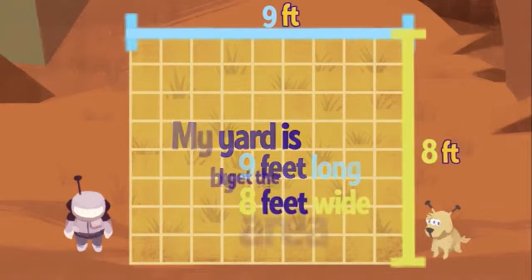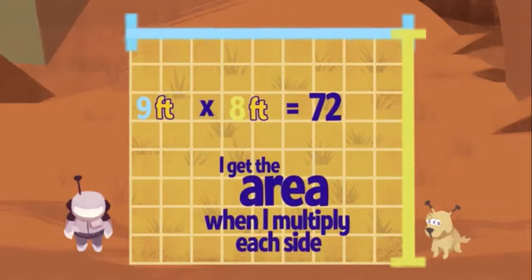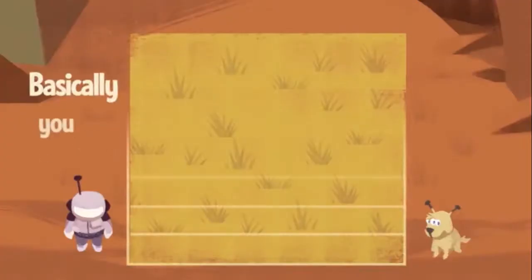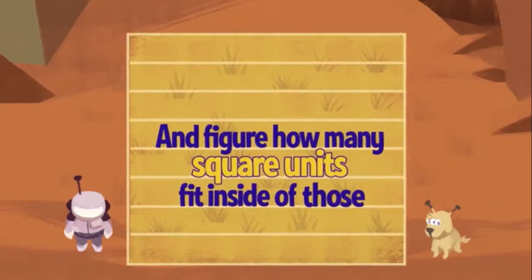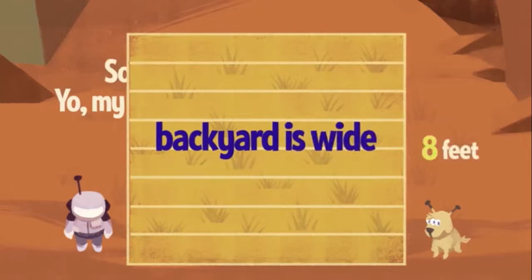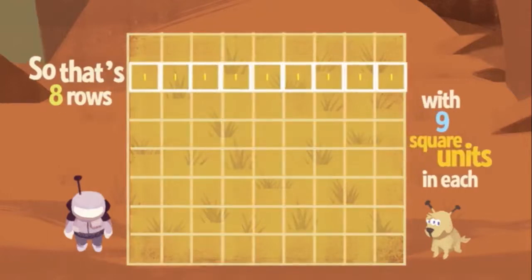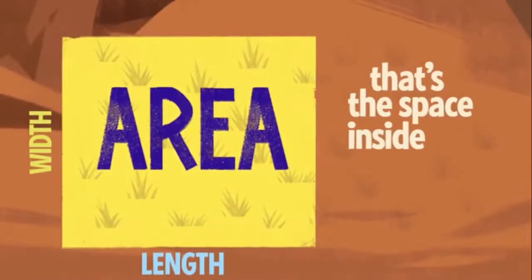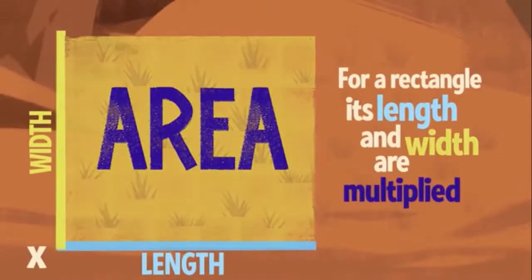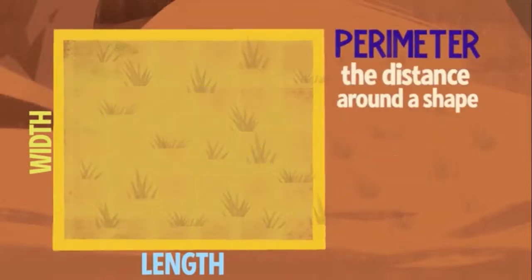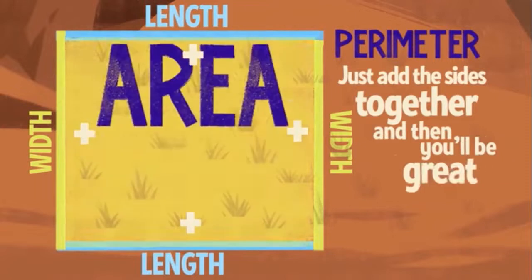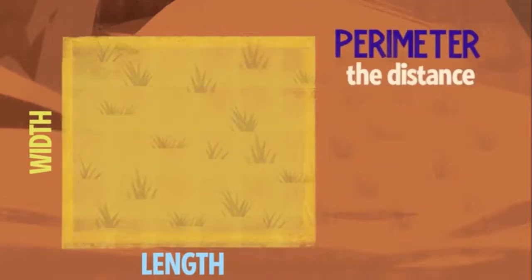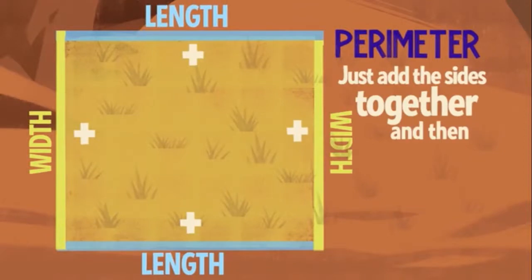My yard is nine feet long by eight feet wide. I get the area when I multiply each side. Nine times eight is 72. Basically you take the rows and columns and figure how many square units fit inside. My backyard is eight feet wide, so that's eight rows with nine square units in each. Multiply the eight rows by nine square units, you get 72. Area — the space inside; for a rectangle it's length and width multiplied. Perimeter — the distance around a shape — just add the sides together and then you'll be great.